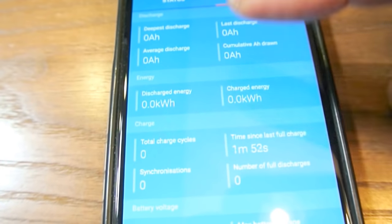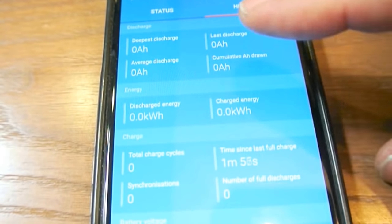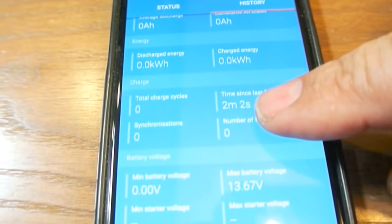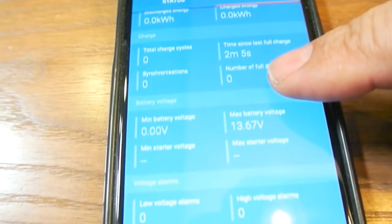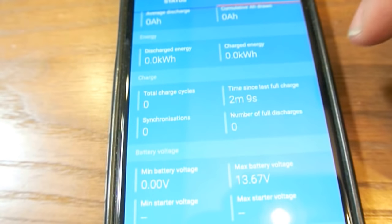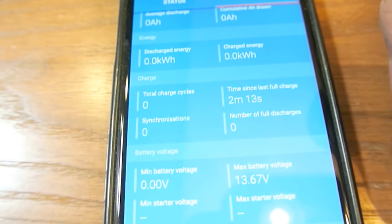This gives you some history. We got the deepest discharge, last discharge, average discharge, cumulative amp power, discharge energy, and charge generating kilowatts, charge, total type cycles, total charge cycles, last time since full charge, synchronization, and number of full discharge.